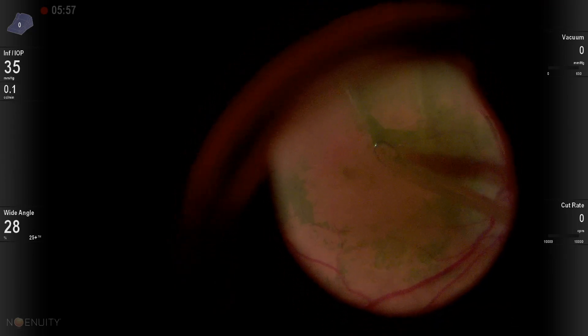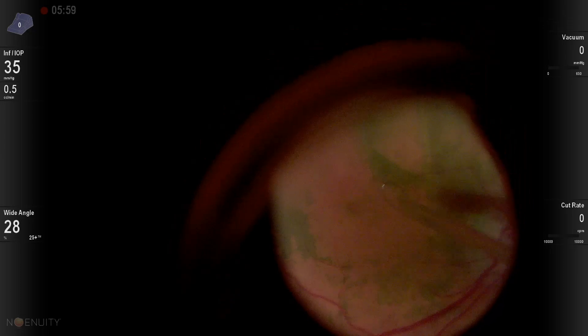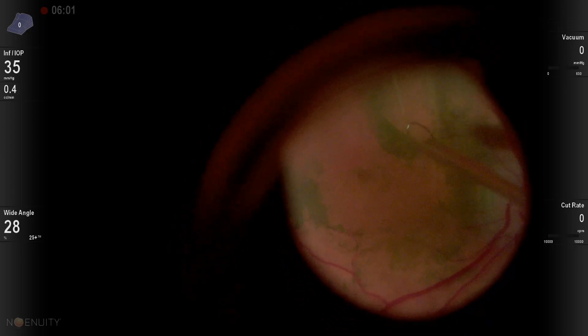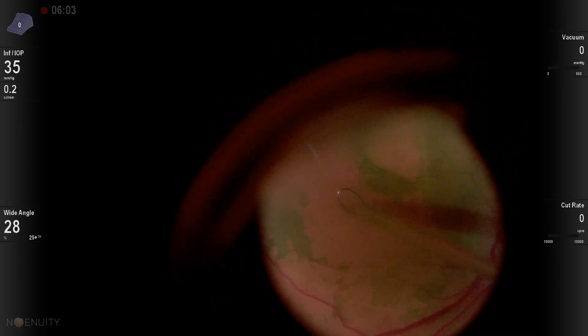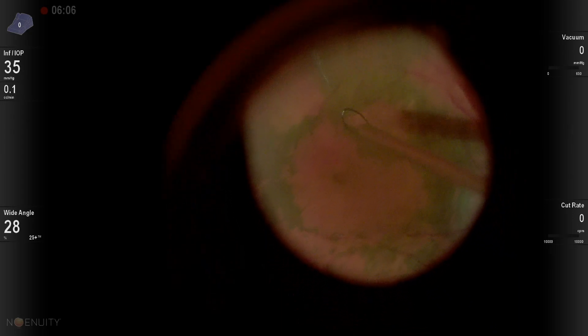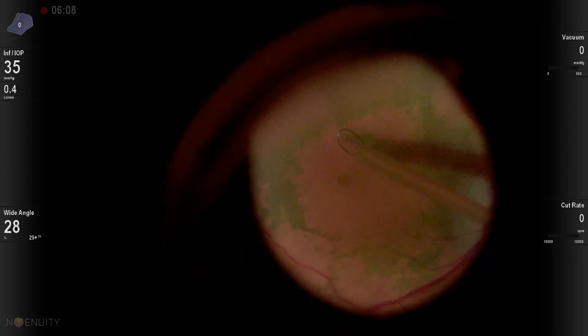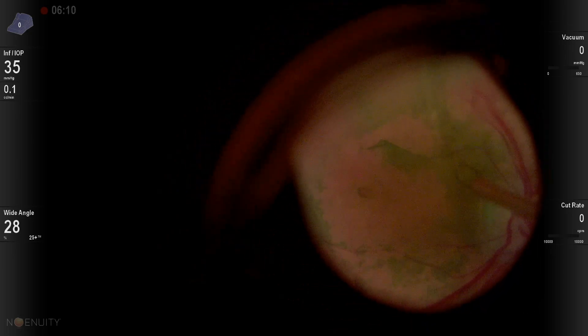You can see this patient is breathing a lot and there's a lot of eye movement, yet the retina never goes out of focus. The Flex Loop is really nice because if you have a patient with a lot of movement, pinching and peeling the ILM or epiretinal membrane can be dangerous.